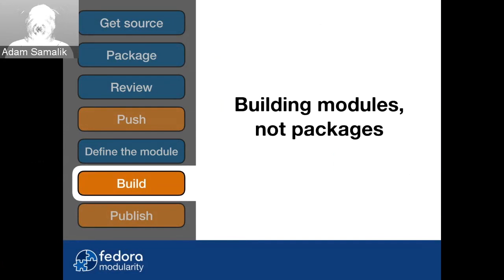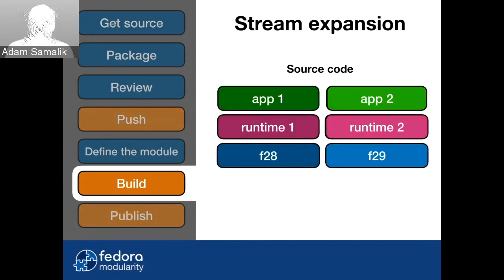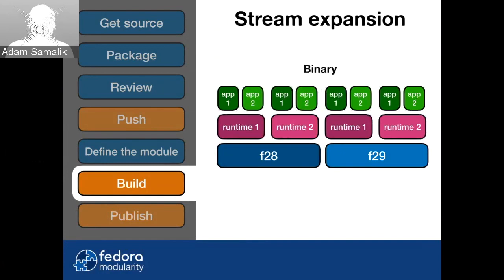What does 'building everywhere' mean? We have something called stream expansion. Looking at the source code, there is basically one source for each application version and one for each runtime version. When you build, everything gets built against everything — both runtimes on both Fedora releases, and both applications on both runtimes. That's why you submit just one module build and everything happens automatically.